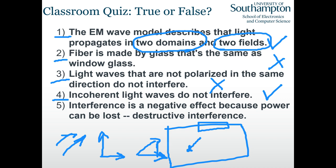The fifth question: interference is a negative effect because power can be lost when destructive interference happens. This is false. In physics, interference is a neutral term. When there is destructive interference somewhere and the power there is zero, it simply means that power goes somewhere else.